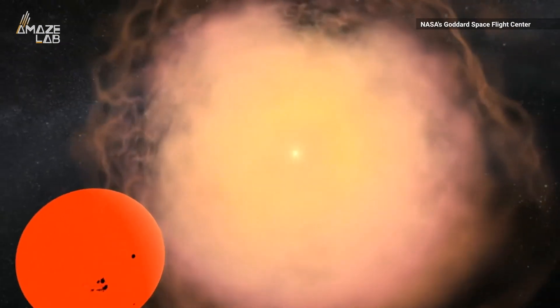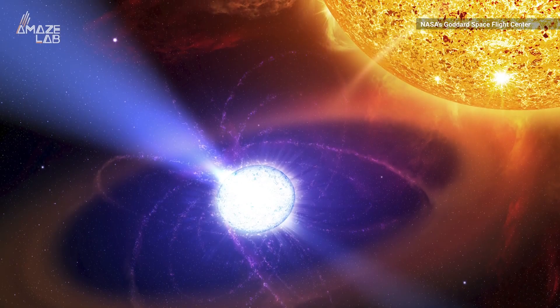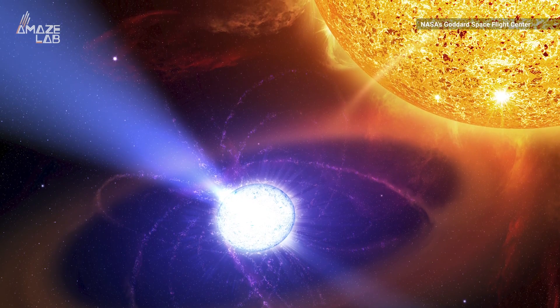Astronomers found one of these star systems, dubbed J2056, about 850 light years away.